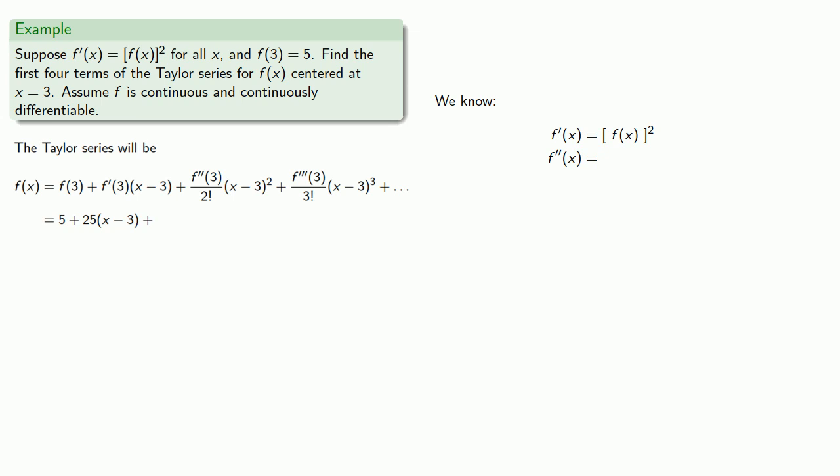This goes back to the chain rule. This is something squared, so our derivative will be 2 times something times the derivative of our something. Put things back where you found them, and we can simplify since we know what f'(x) is.